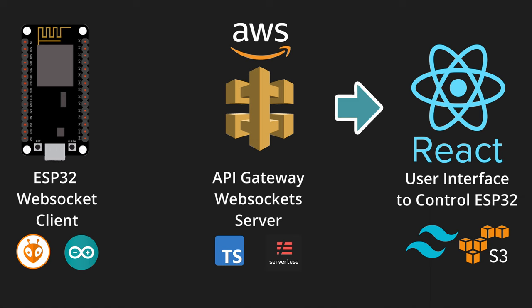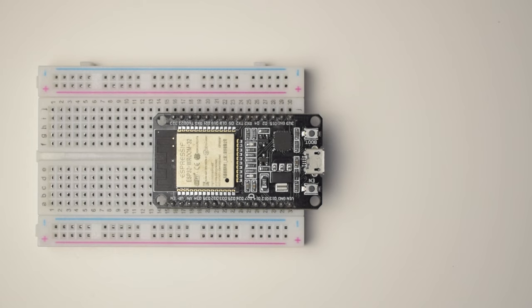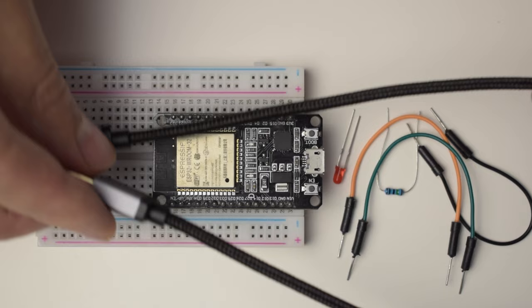In terms of hardware, I will use an ESP32 DevKit board, an LED diode, a current limiting resistor, and some wires to connect everything together. As always, you can find all the specifications in the description below.